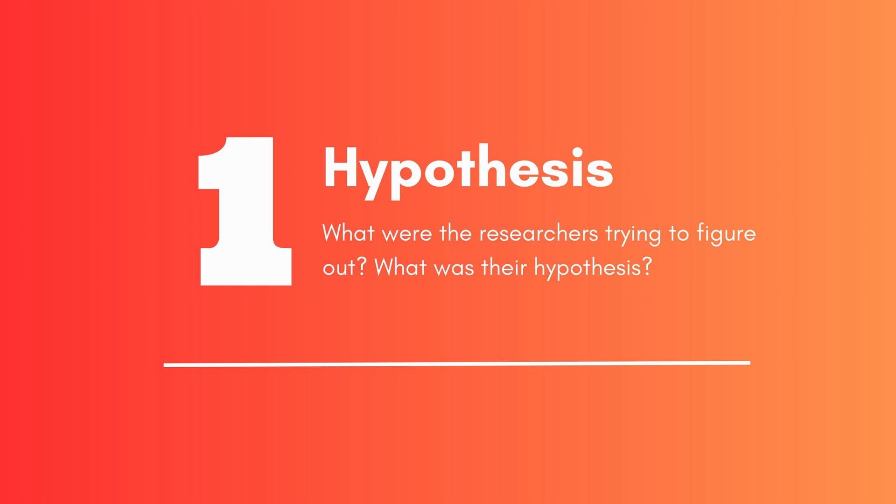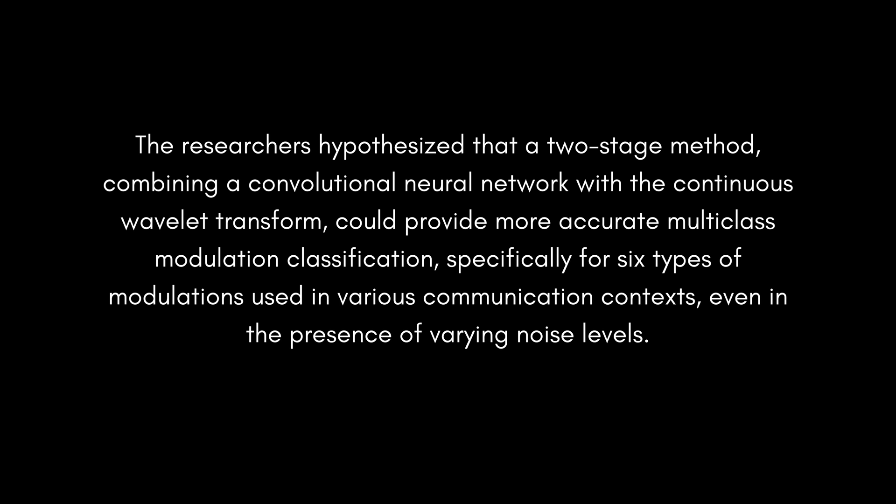What were the researchers trying to figure out? The researchers hypothesized that a two-stage method combining a convolutional neural network with continuous wavelet transform could provide more accurate multi-class modulation classification — specifically for six types of modulations used in various communication contexts — even in the presence of varying noise levels. In this study, they were trying to determine if this hypothesis was correct.